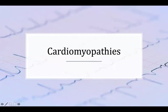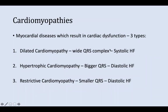Now cardiomyopathies. These are myocardial diseases that result in cardiac dysfunction. There are three types: dilated, hypertrophic, and restrictive cardiomyopathies. Dilated cardiomyopathy manifests as a wide QRS complex resulting in systolic heart failure, whereas hypertrophic cardiomyopathy manifests as a bigger QRS complex. Hypertrophic and restrictive cardiomyopathies cause diastolic heart failure, and restrictive cardiomyopathy will cause a smaller QRS complex.